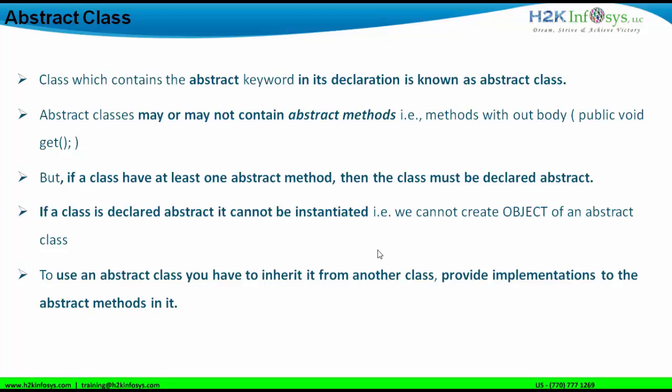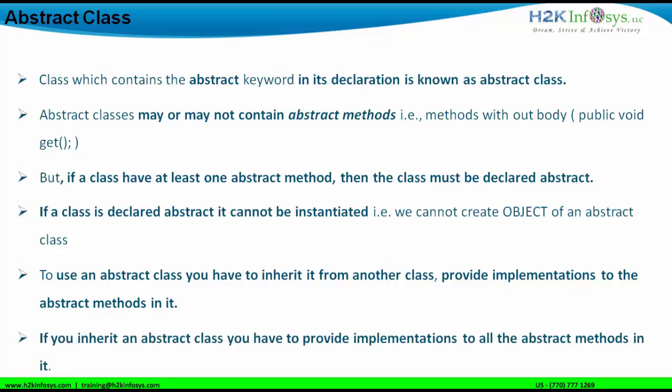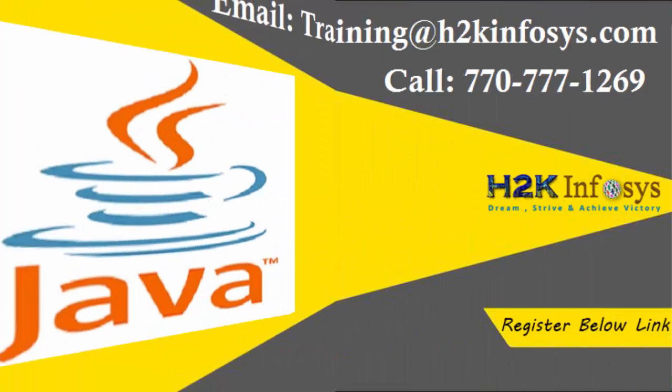So how do you use an abstract class if you cannot create an object of it? You have to inherit it in a subclass. A subclass inherits the abstract class and then the abstract class properties can be used. If you inherit an abstract class that has abstract methods, all those abstract methods must be overridden — i.e., implemented — in the subclass.